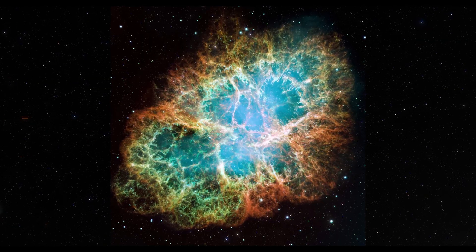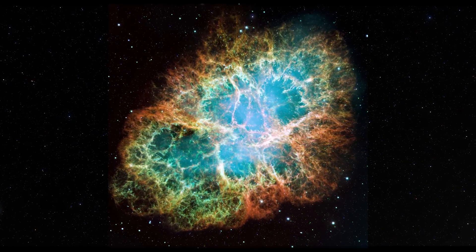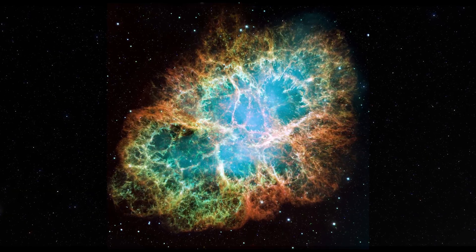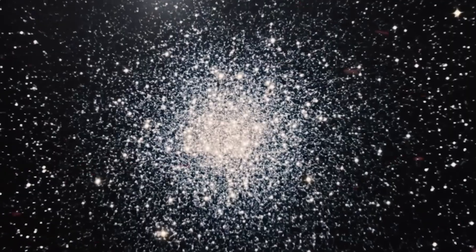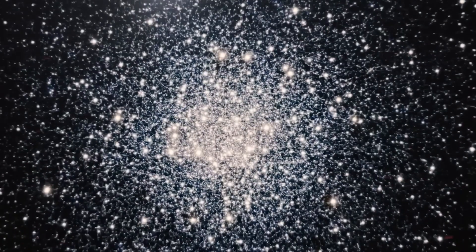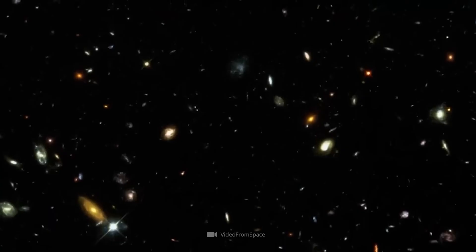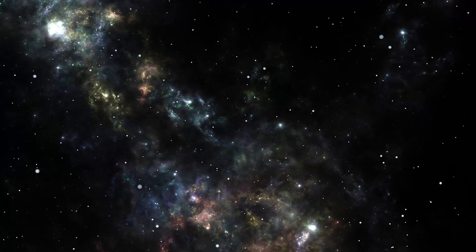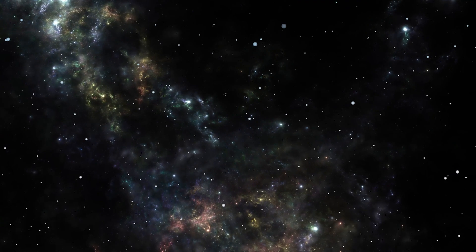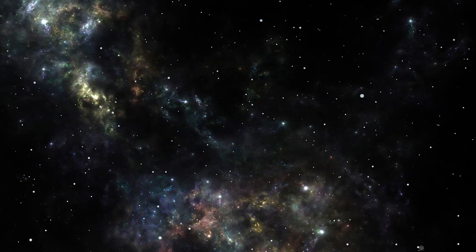Globular clusters such as M92 are convenient cosmic laboratories because their stars form together, giving astronomers a unified population to analyze. Stars live out their lives differently depending on how massive they were at birth. Heavy stars burn hot and fast, while smaller ones linger for eons. By studying which stars in a cluster have evolved beyond their main fuel-burning stage, scientists can trace the cluster's moment of origin.